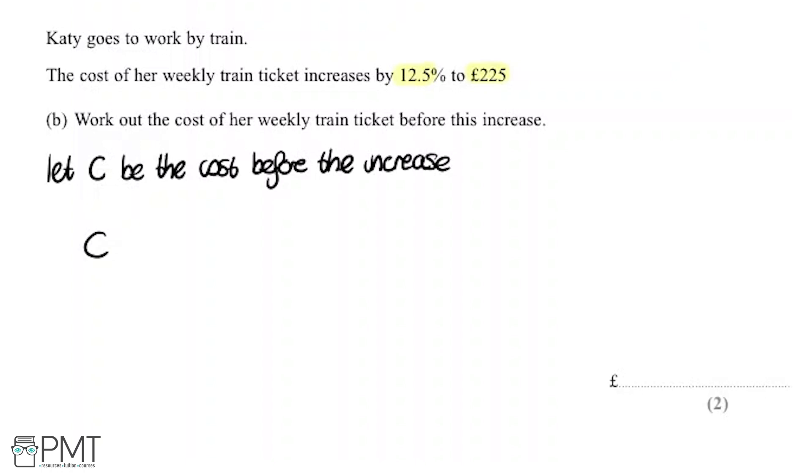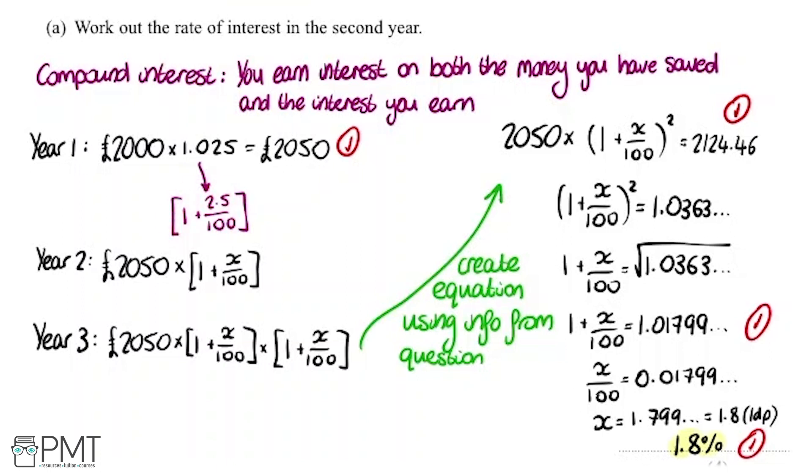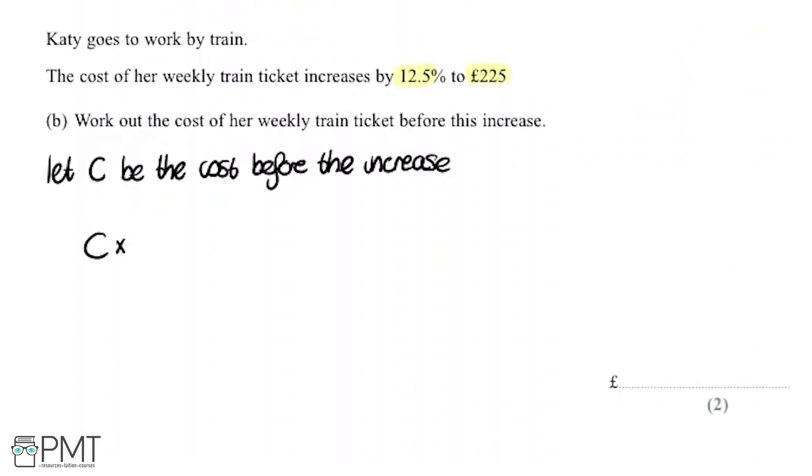Then we're told that increases by 12.5 percent. We can use our handy formula to work out what we need to multiply that by. We're going to multiply by 1 plus, because we're increasing by 12.5 percent, I'm going to put 12.5 up here, divide it by 100. We're told that after the increase, the cost is 225, so that will equal 225.